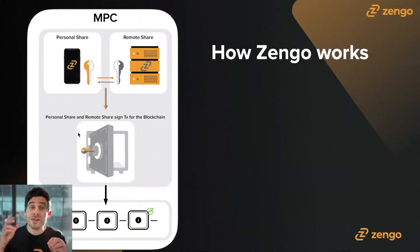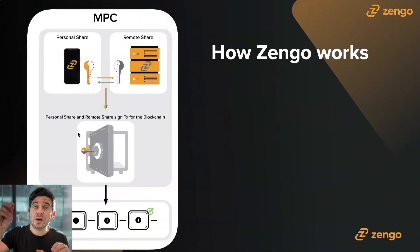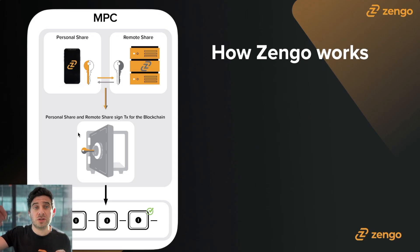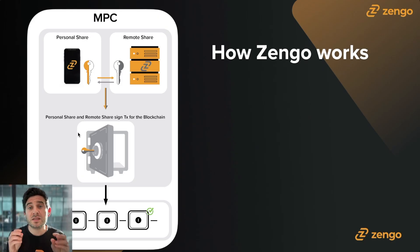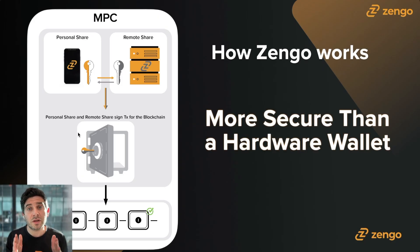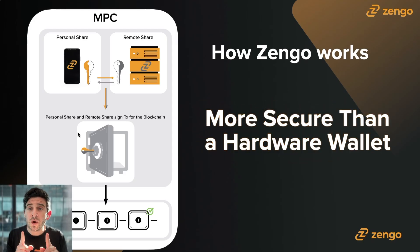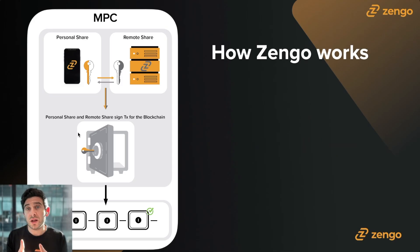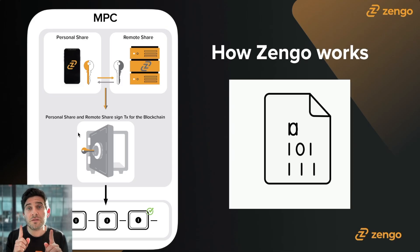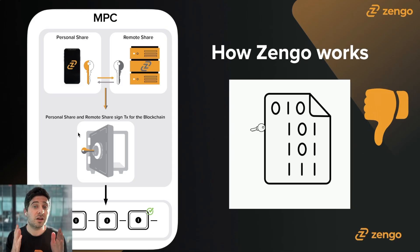But the beauty of the system is even if a hacker is able to somehow get access to your personal share, they still don't have the remote share on the Zango server, and vice versa. If they're somehow able to get access to your remote share on the Zango server, they still don't have your personal share on your actual device. This makes the system an order of magnitude more secure than a traditional hardware wallet or software wallet — these are single factor wallets with a single point of failure.